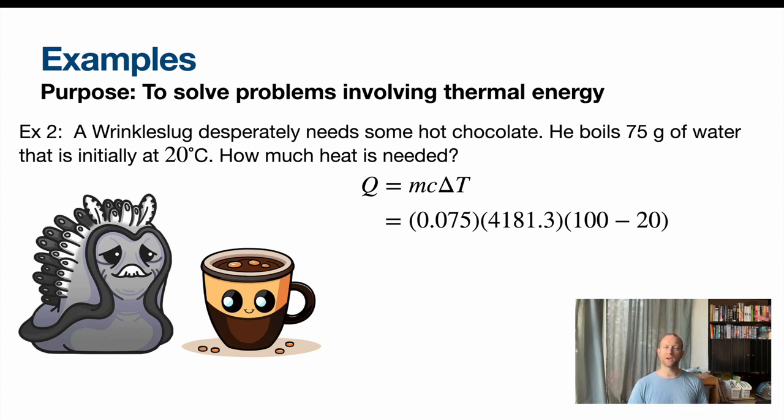C. If you look on your formula sheet, water, that is liquid. The specific heat for that is 4,181.3. And my change in temperature, I'm going from 20 to boiling. You need to know that the boiling point of water is 100. I'm expecting you to know that. Plug all these numbers in. We get 25,088 joules of heat is needed to change the temperature of the water.